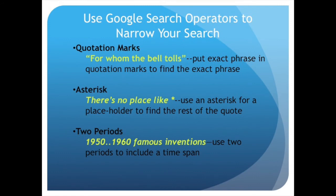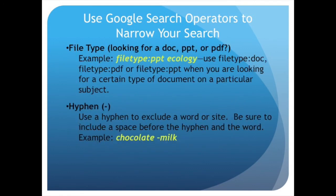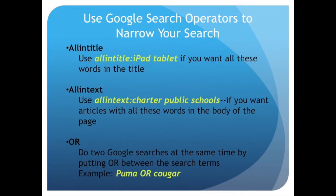Use Google search operators to narrow your search. Use quotation marks for an exact phrase, an asterisk as a placeholder, and two periods for a time span. Use 'filetype:' when looking for a doc, PowerPoint, or PDF. Use a hyphen to exclude a certain word or site. Use 'allintitle:' to require all words in the title, 'allintext:' for all words in the body, and 'OR' to perform two searches at the same time.